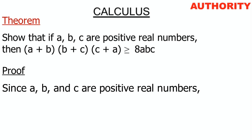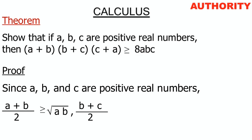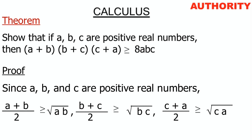Let's use the Arithmetic and Geometric Mean inequality here. We can say (a+b)/2 is greater than or equal to the geometric mean, which is √(ab). We have proved this previously. Also, (b+c)/2 is greater than or equal to √(bc), and (c+a)/2 is greater than or equal to √(ca).